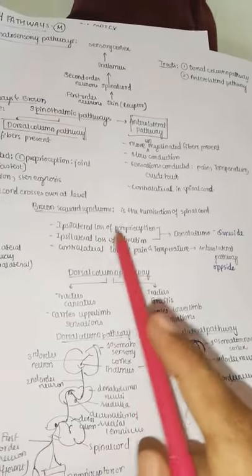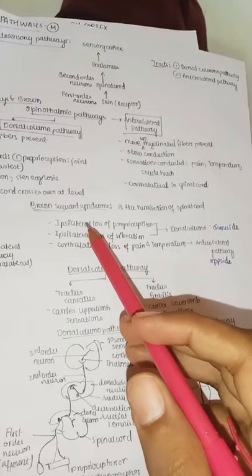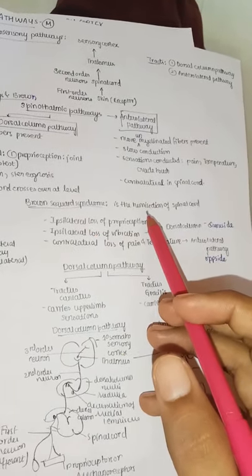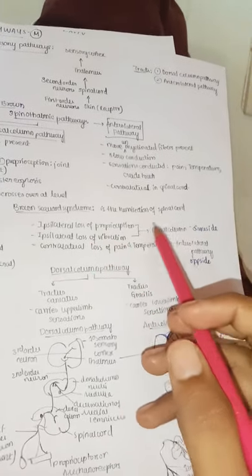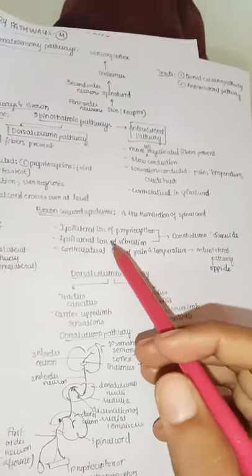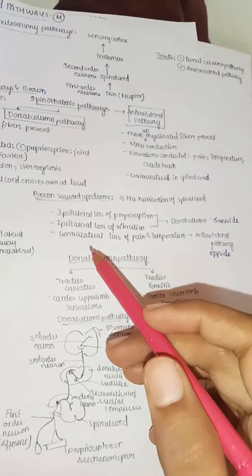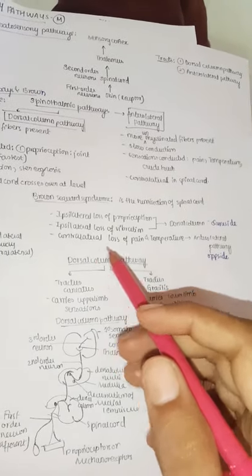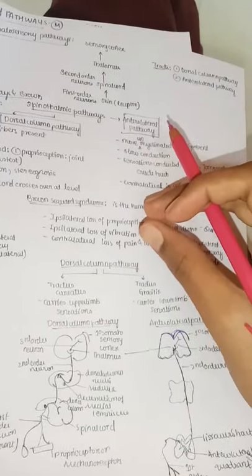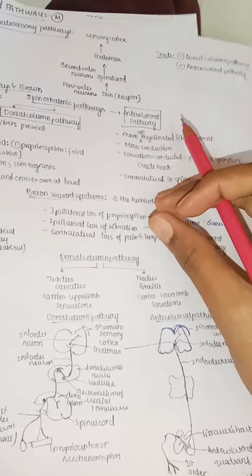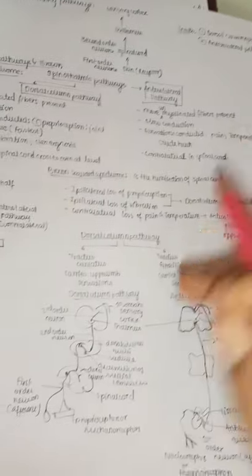Brown-Séquard syndrome is a hemisection of the spinal cord (half the cord is cut). Findings: ipsilateral loss of proprioception and vibration (dorsal column, same side as injury) and contralateral loss of pain and temperature (anterolateral pathway, opposite side). If injury is on the left, proprioception is lost on the left and pain/temperature is lost on the right.